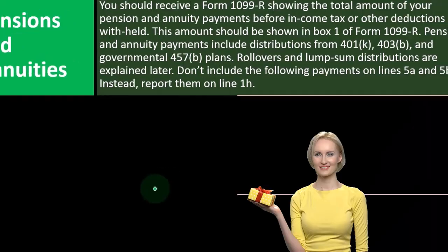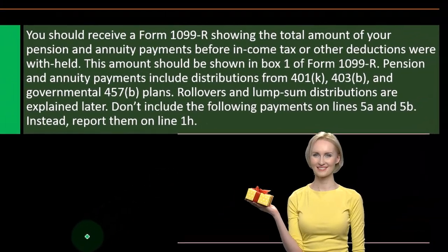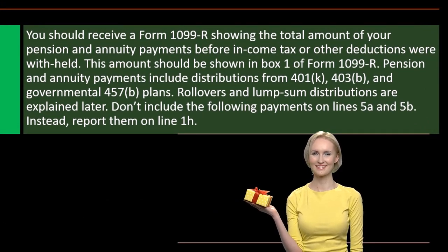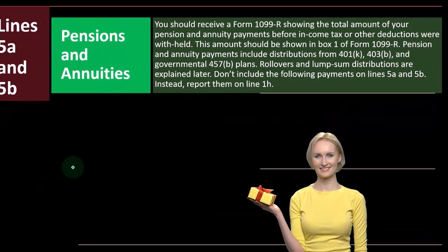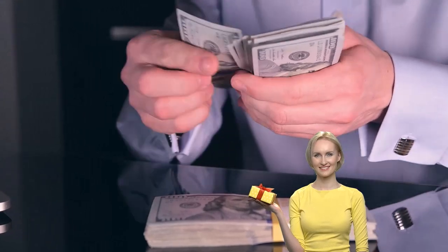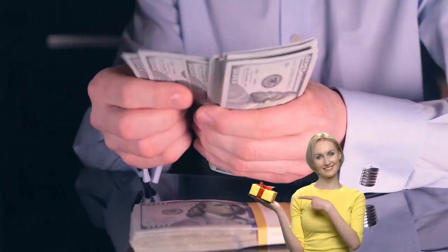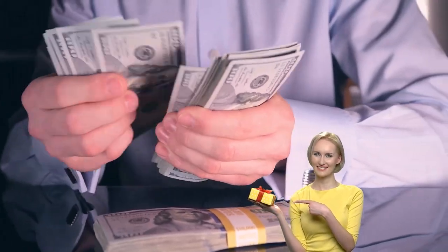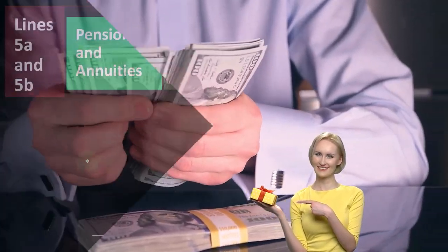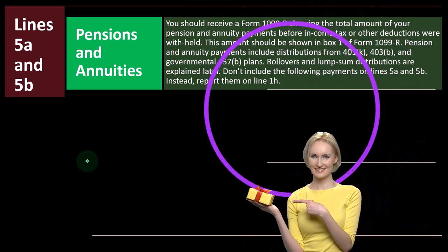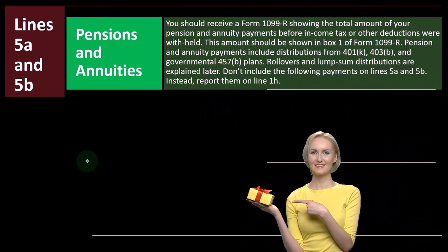This is important because what sometimes happens is people pull the money out when going to a new job, and they get hit not only with taxes on it but a 10% penalty as well. So you want to avoid doing that. Rollovers and lump sum distributions are explained later.